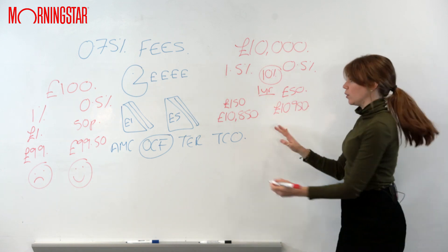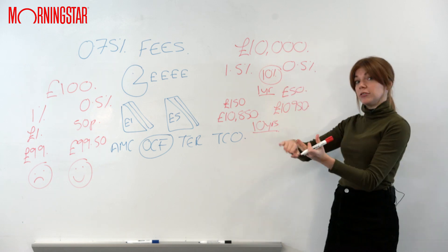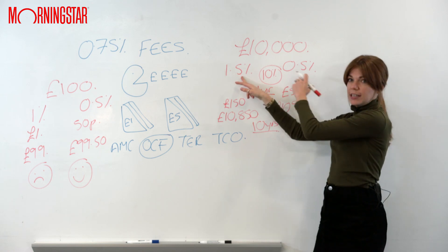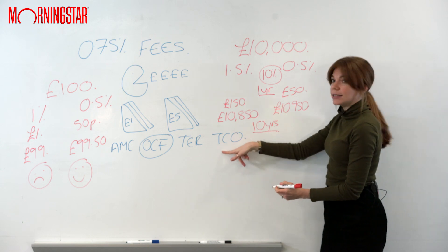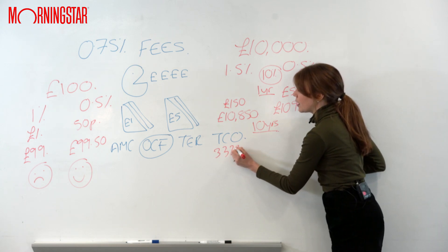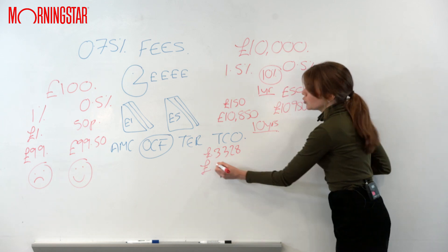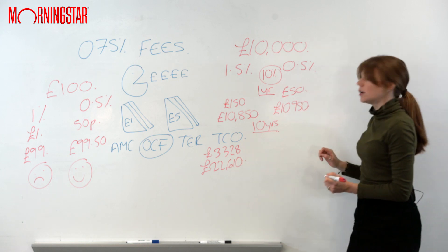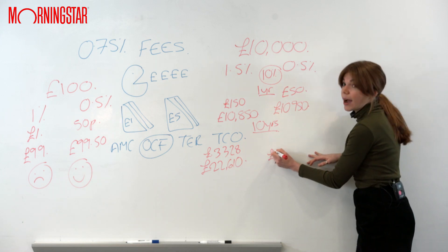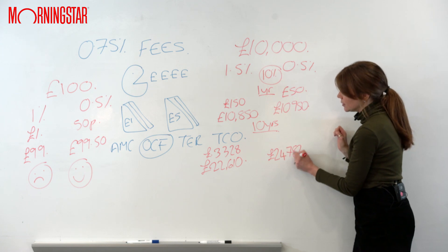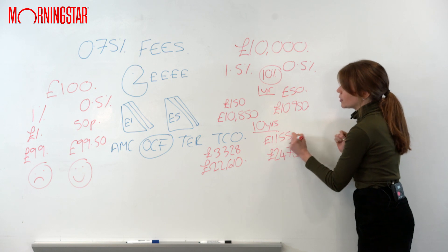Let's look at it over the long term — 10 years — still getting this growth every year, so the growth is compounding and the fees are also compounding the other way. After 10 years, the person in the 1.5% fund has paid £3,328 in fees and gets back £22,610. Not bad — it's just leaving your money there. However, the person in the 0.5% fund gets back £24,782 because they've only spent just over £1,000 on fees.